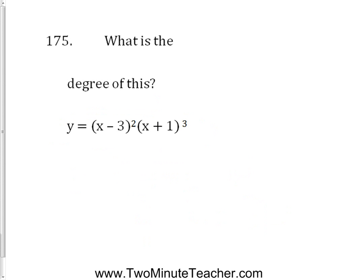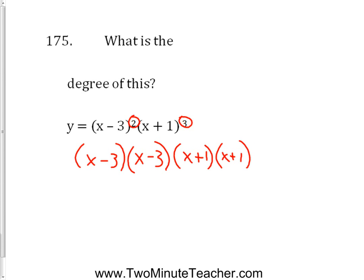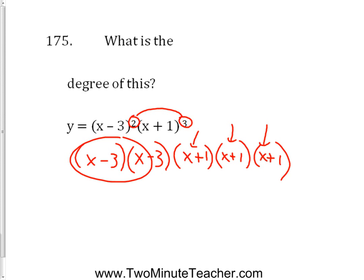Here's another one like that. What's the degree? You can look at this degree and this degree and add them together to say this will be degree 5. That's because if I multiplied it all out, x minus 3 squared is x minus 3 times x minus 3, and x plus 1 cubed is x plus 1 three times. Once multiplied out, x times x gives x squared, times another x gives x to the third, x to the fourth, x to the fifth. So it's degree 5.